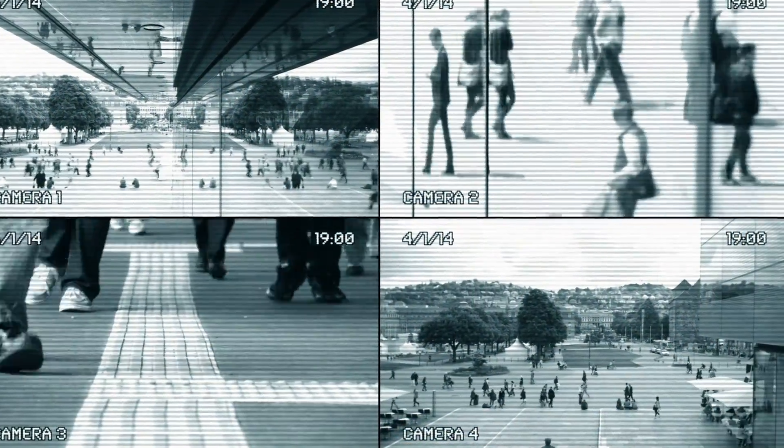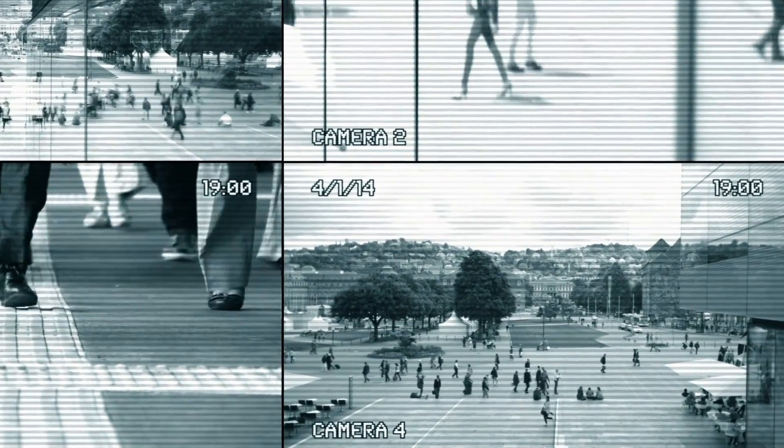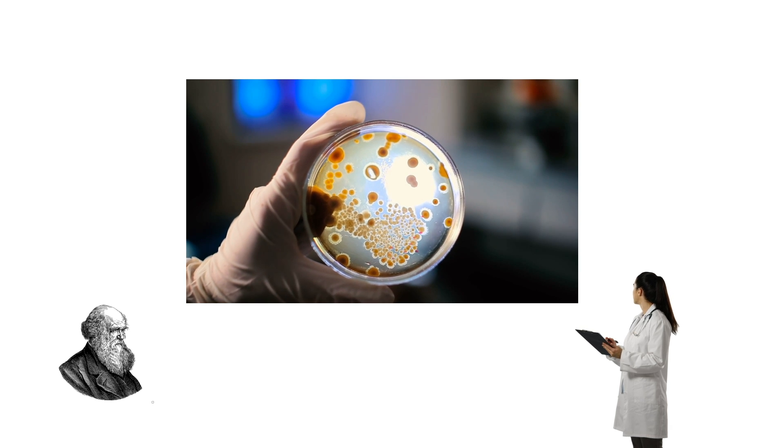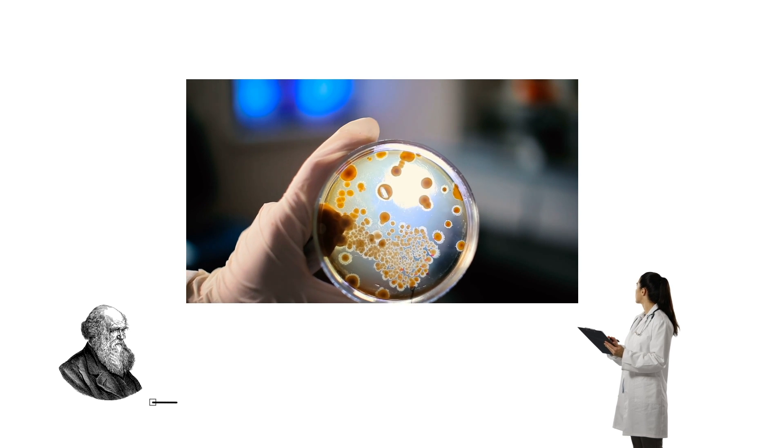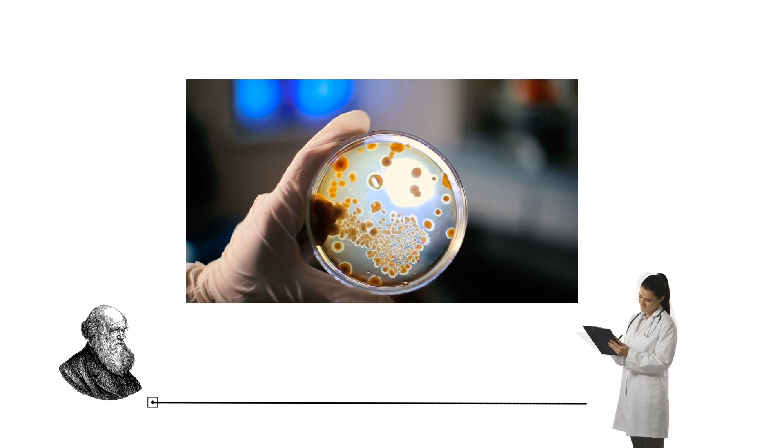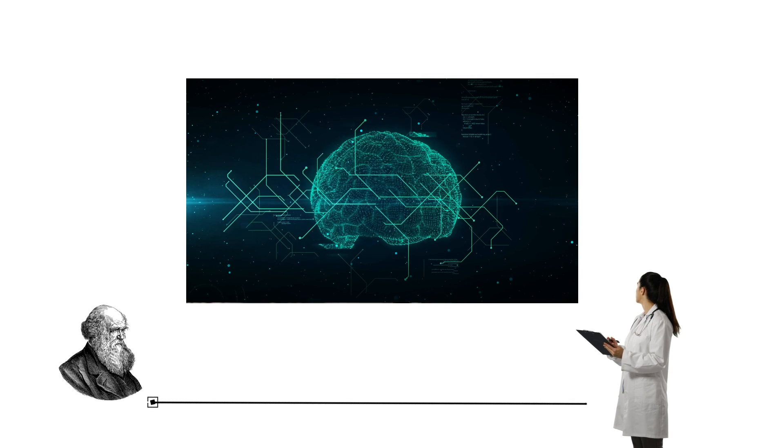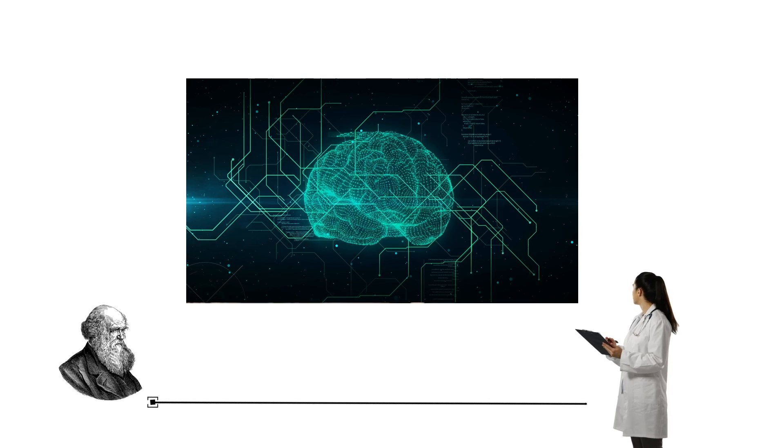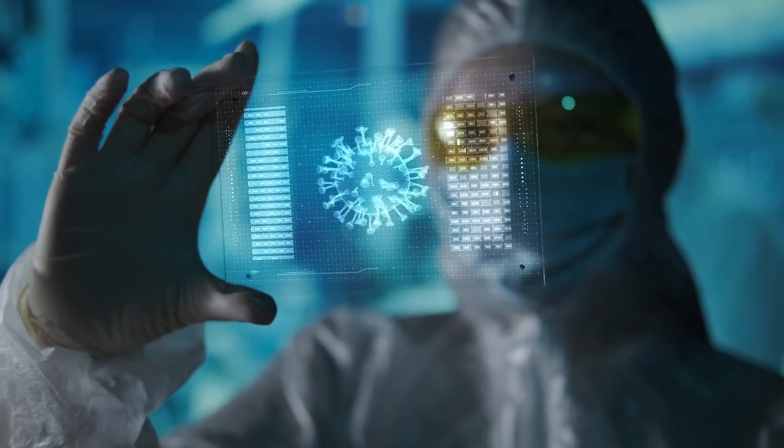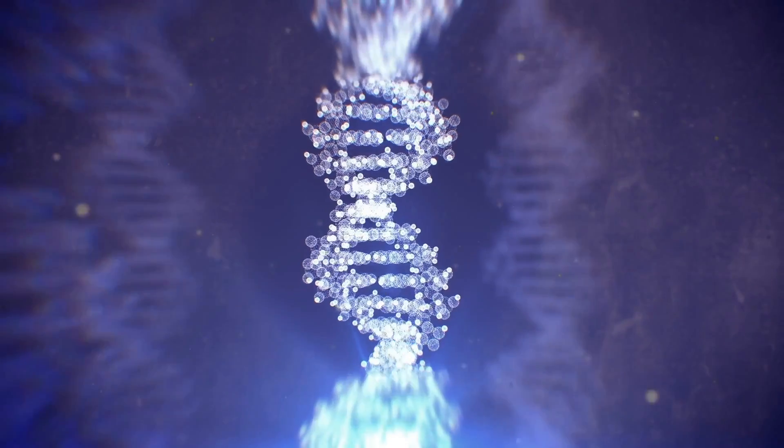You can really summarize 150 years of biological research since Charles Darwin in three words: organisms are algorithms. This is the big insight of the modern life sciences—that organisms, whether viruses or bananas or humans, they are really just biochemical algorithms, and we are learning how to decipher these algorithms.